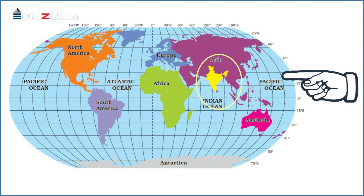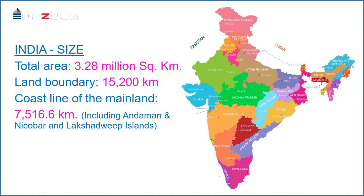As you know, the size of a country means the total area of the country. India is the 7th largest country in the world, as you can see in the map. The landmass of India has an area of 3.28 million square kilometers.